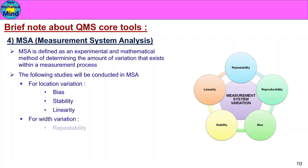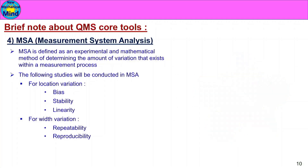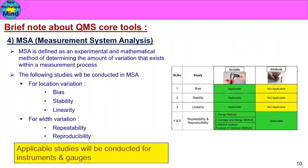Studies conducted in MSA include repeatability and reproducibility study, which can be used for location variation study or width variation study. All studies will be used in the company to evaluate measurement system performance. For more details on MSA, you can see the link in the description.